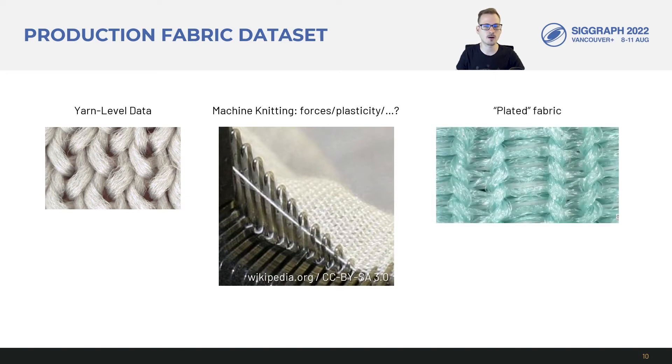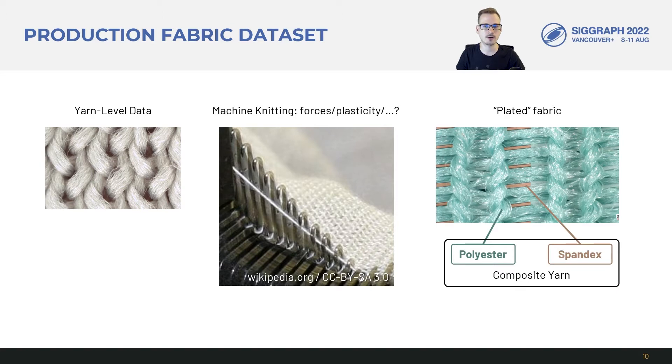In our data set, more than half are so-called plated fabrics, where multiple different yarns are overlaid on top of each other during knitting. In this example, we have a combination of a stiff polyester yarn and a compliant spandex yarn. This combination leads to some very interesting non-linear composite yarn material complicating the design or choice of yarn simulation models.